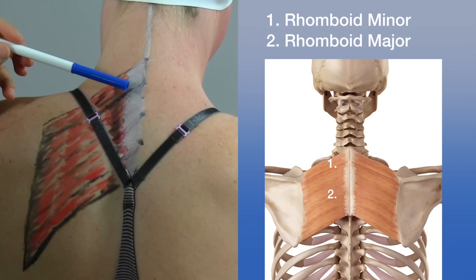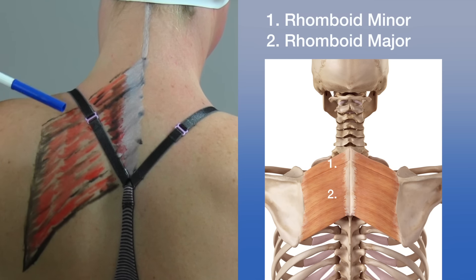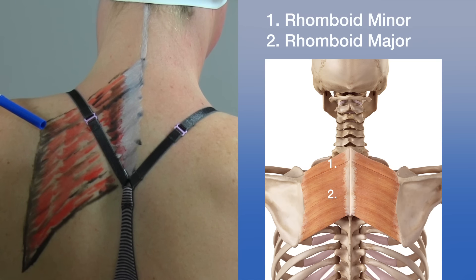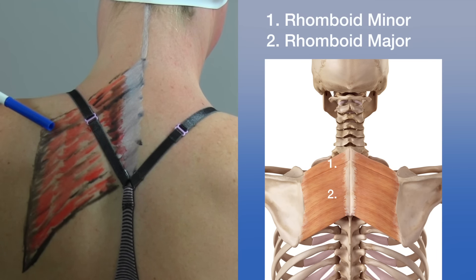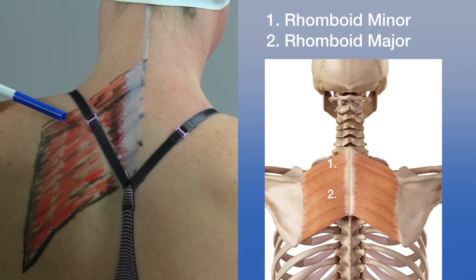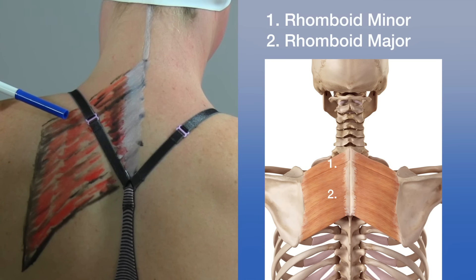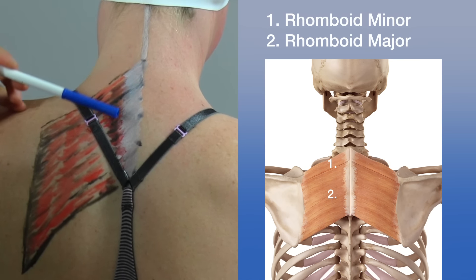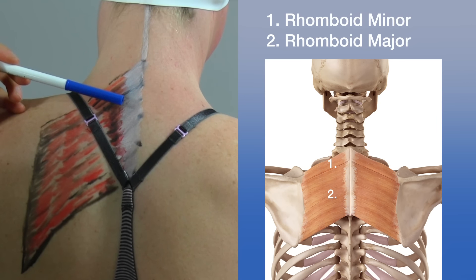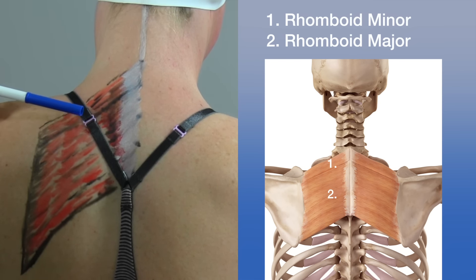The levator scapulae originates from the transverse processes of C1 through C4 and inserts on the superior angle of the scapula. Its actions are to elevate and downwardly rotate the scapula at the scapulocostal joint. It also helps to extend, laterally flex, and ipsilaterally rotate the neck at the spinal joints.